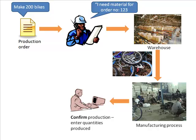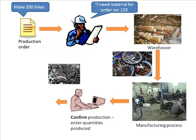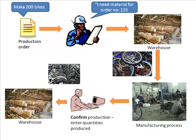For example, in warehouse management you will have a transfer request that becomes a transfer order. The people in the warehouse actually go do the work and then enter a confirmation saying it's done. Similarly, at the end of production, somebody will enter the confirmation of production. Once confirmed, all the information about what happened during the process is now in the system. And of course, once you've confirmed production, you then have a bunch of finished bikes that you can put into the warehouse — that's the goods receipt that takes the finished products in.